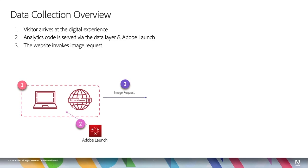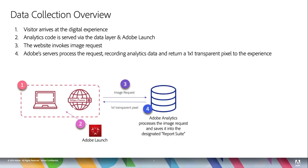And what does it do? Well, it kind of wraps up everything in a nice bow — meaning it grabs some information about the browser and the environment and some of the custom things that you might be putting into the code — and it wraps it up in a nice package and sends it to Adobe in the form of an image request. Adobe processes this image request and sends back a little transparent pixel.